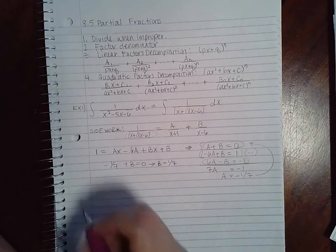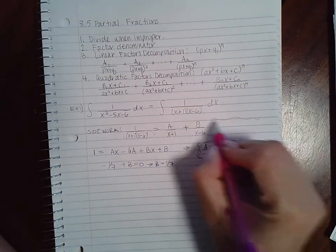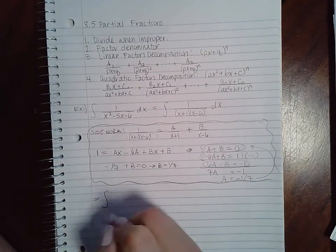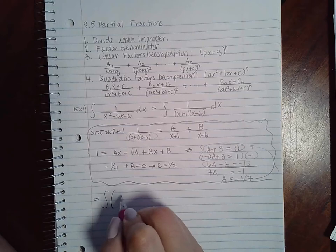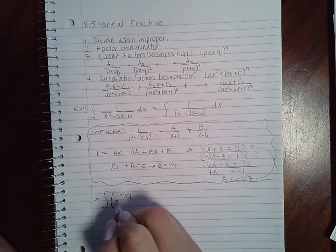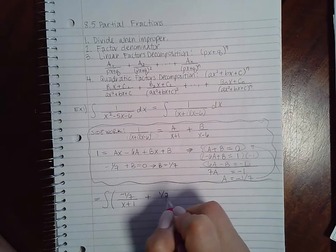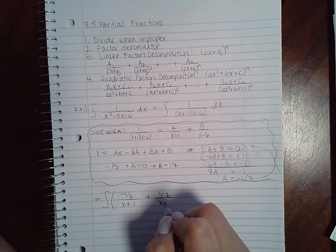So what do I end up with? I end up with my fraction becoming negative one seventh over x plus one plus one seventh over x minus six.